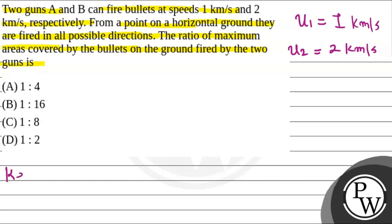Let's start with the solution. But before that, let's talk about the key concept we're going to use here. We have a horizontal range formula: R equals u squared sine 2 theta divided by g, where theta is the angle of projection and u is the initial velocity of projection.